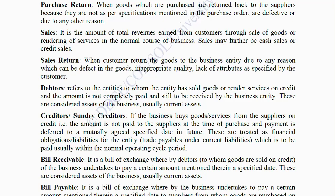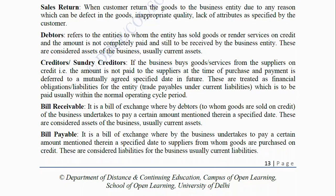Bill Receivable: It is a bill of exchange whereby a debtor to whom goods were sold on credit undertakes to pay a certain amount mentioned therein on a specified date. These are considered current assets of the business. Bills Payable: It is a bill of exchange whereby the business undertakes to pay a certain amount mentioned therein on a specified date to suppliers from whom goods are purchased on credit. These are considered current liabilities for the business.